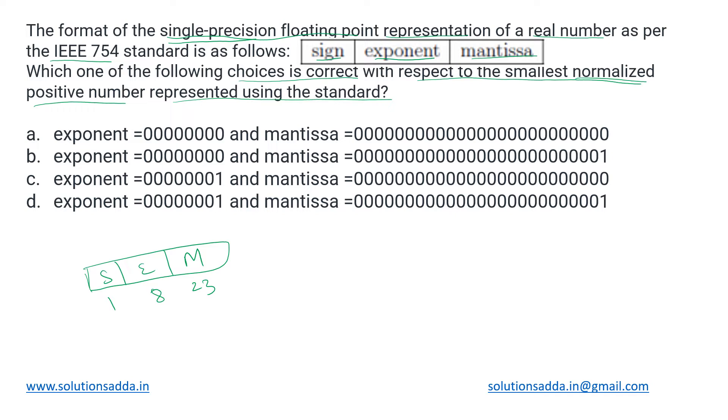We want to represent the smallest possible positive number using this representation. We do it in normalized form, so we'll go for implicit normalization.